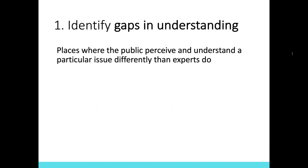First, we'll go into identifying gaps in understanding. These gaps are places where the public perceive and understand a particular issue — in this case ocean acidification — differently than experts do. The first example is regular versus rampant CO2. Researchers through NEOCI have done a lot of work to understand how the public thinks about ocean acidification, what they understand, what they don't. They found that a lot of general public members think that ocean acidification is produced by either regular or rampant CO2 — not a synergy of both. That's the first gap in understanding they were able to identify.